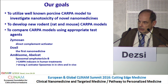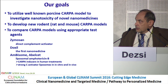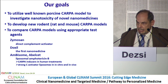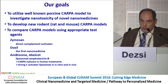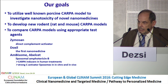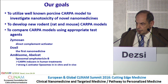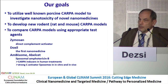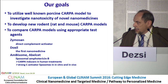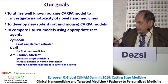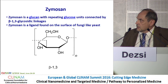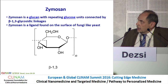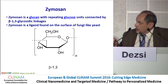Another goal is to develop new rodent models — rat and mouse models — and to compare these models using appropriate test agents like zymosan, which is a direct complement activator; Doxil, the first nanomedicine; AmBisome; and Abelcet. AmBisome is a liposomal amphotericin B, while Abelcet is not liposomal but a lipid-containing nanomedicine that also contains amphotericin B as its active ingredient.